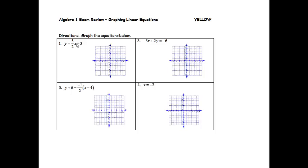Directions: Graph the equations below. Alright, y equals three halves x minus three. Remember, we're going to start with the number without the x on it, so I'm going to start down at negative three. And then from there, I'm going to go up three over two.